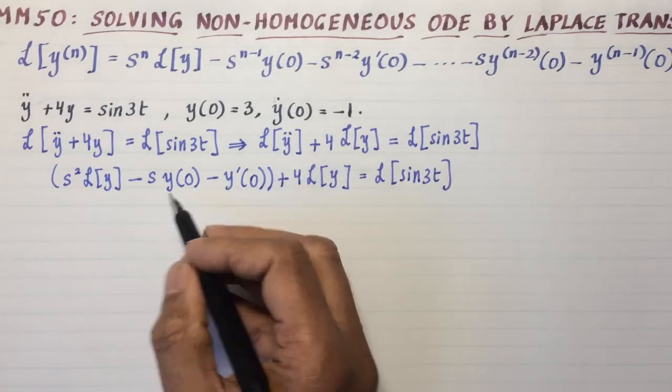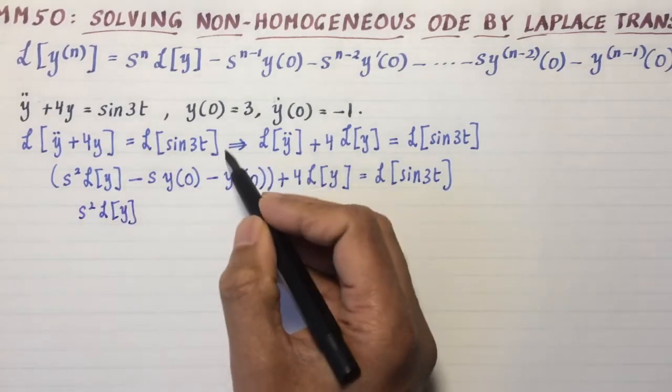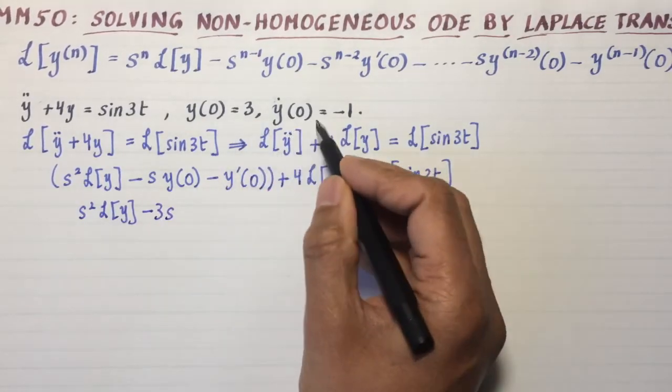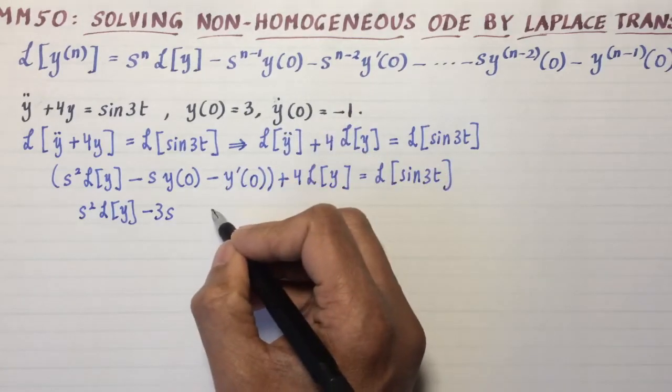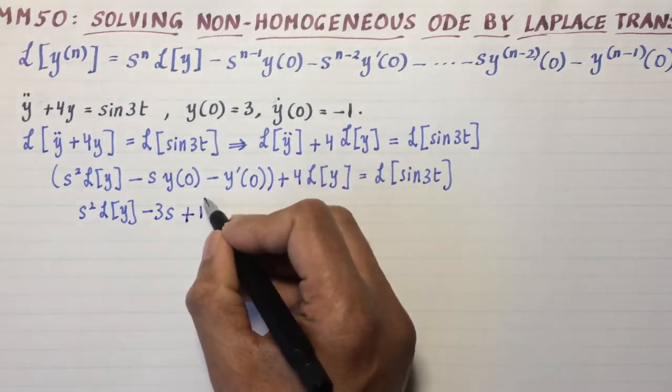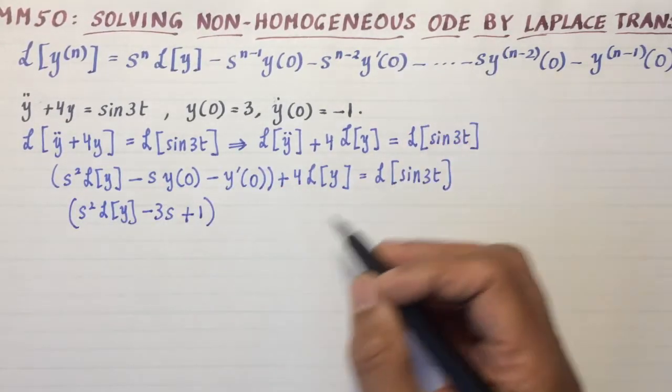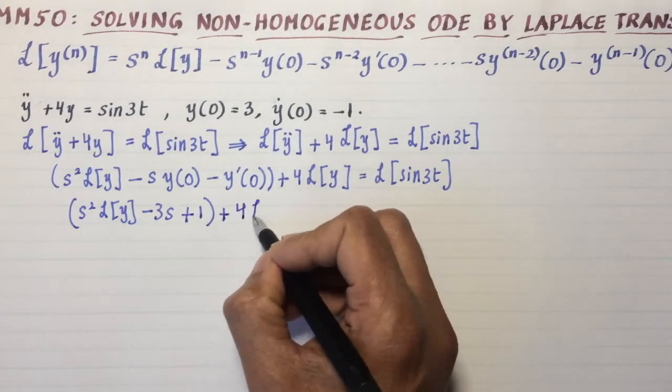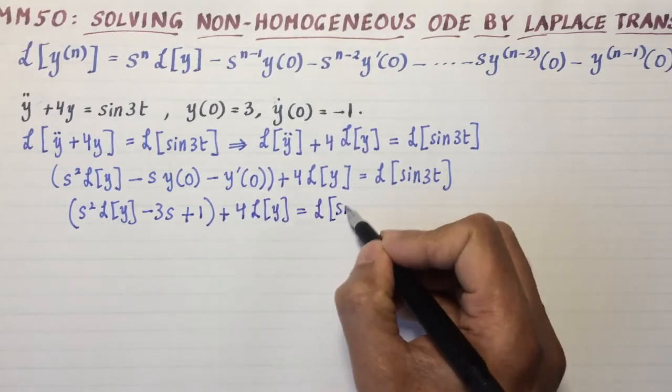Let's put the initial conditions in. So I'm going to get s squared Laplace transform of y. Now y(0) is 3, so that's going to give me negative 3s. And y'(0) is -1, so that's negative of negative or positive. I said prime but I mean dot. Prime and dot are interchangeable in this business.